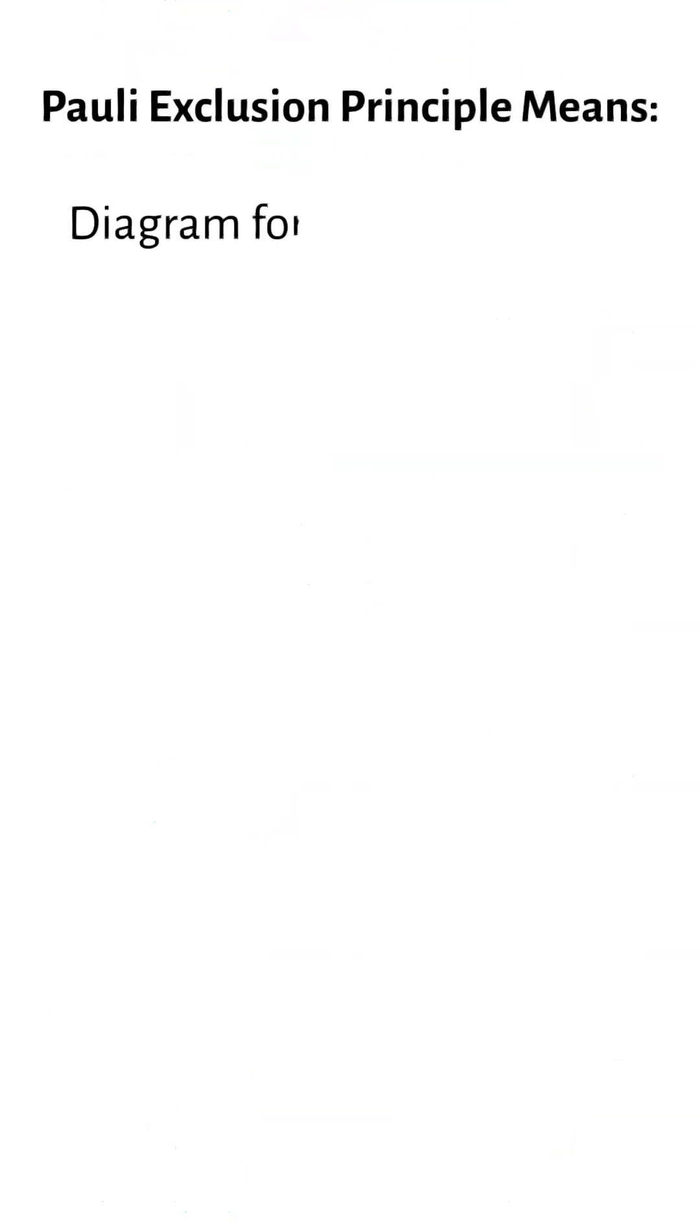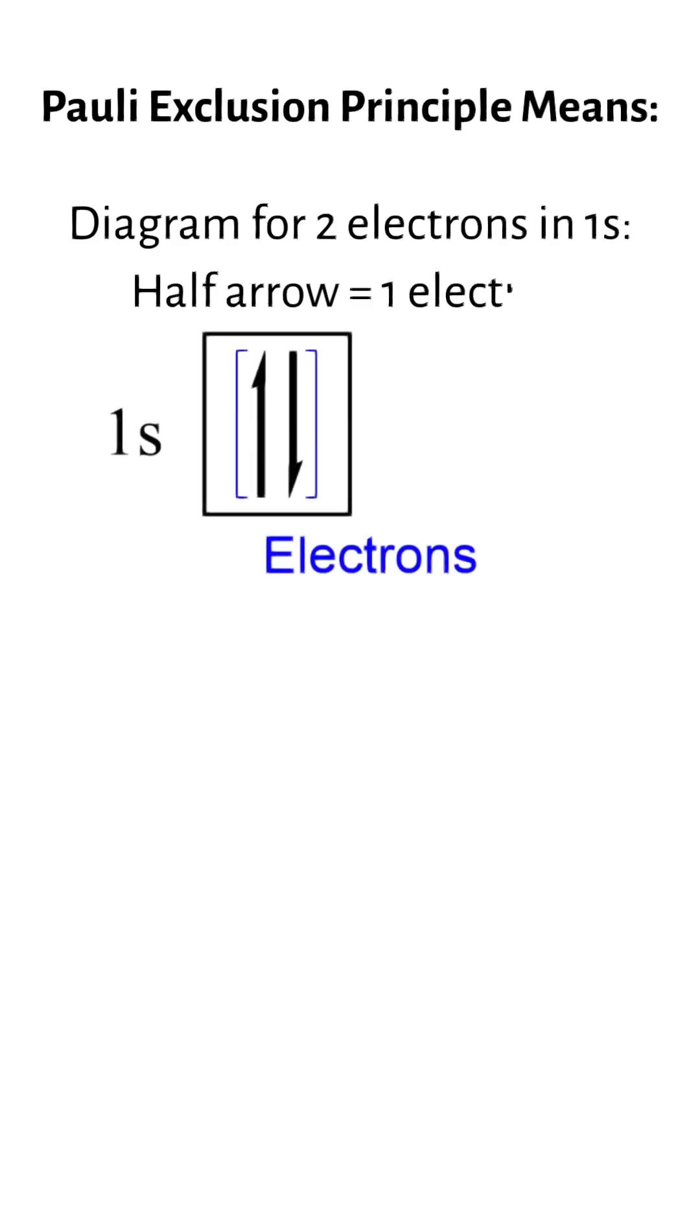A diagram for this, for two electrons in the 1s orbital, would look like this. The half arrow represents one electron, and you can see that one is pointing up while the other is pointing down.